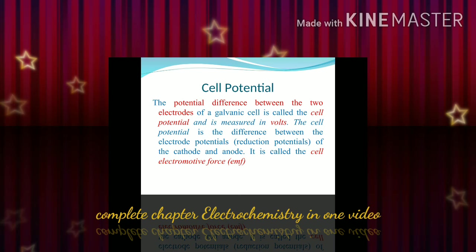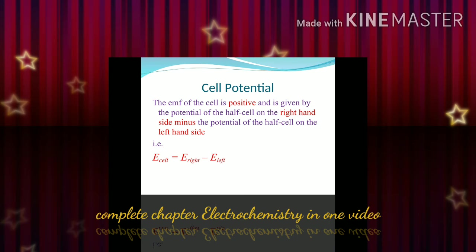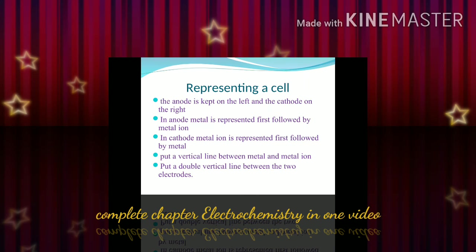The potential difference between the two electrodes of a galvanic cell is called the cell potential, measured in volts. The cell potential can be calculated as: E_cell = E_right − E_left. When representing a cell, the anode is kept on the left and the cathode on the right.